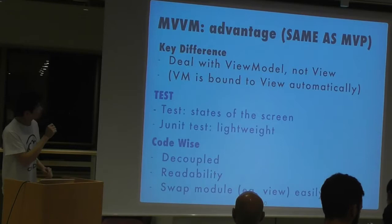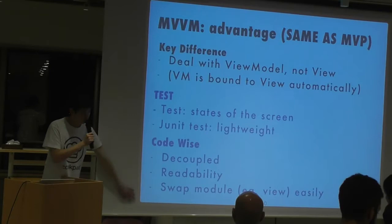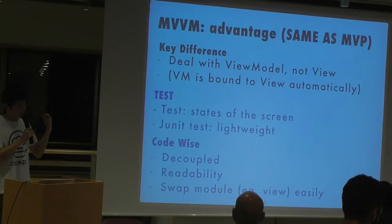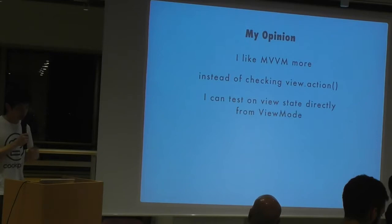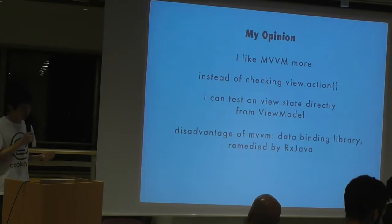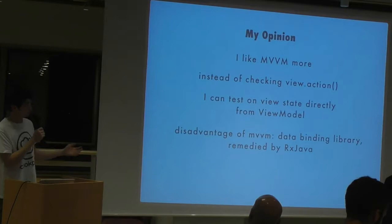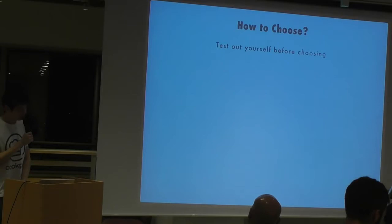Let's look at the advantages of MVVM. The rest is the same as MVP so I won't repeat. The key difference for me is that instead of dealing with the view itself, you deal with the view model and just assume that the view model is bound together with the actual view. In my opinion I like MVVM more because instead of checking the view action, you can test on the view state directly from the view model.